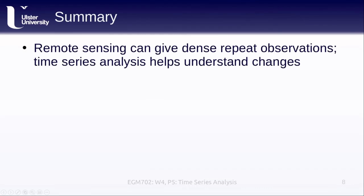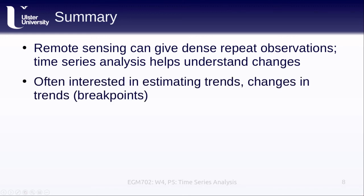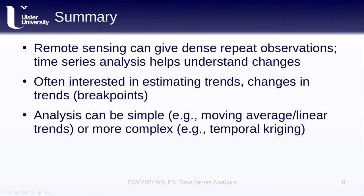To sum all of this up: remote sensing can give us very dense repeat observations, and we can use techniques from time series analysis to help us understand changes in those observations. Often what we're interested in is estimating trends, or especially changes in trends — where those changes usually indicate something interesting has happened. This analysis can be very simple, such as a moving average or a linear best fit, or significantly more complex, such as temporal Kriging.